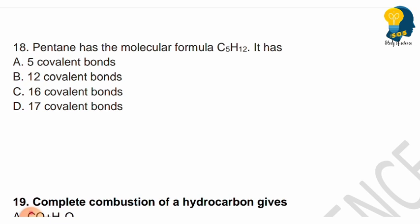Next question: Pentane has the molecular formula C5H12. It has how many covalent bonds? Options are 5, 12, 16, or 17 covalent bonds. Draw the structure of pentane and identify the covalent bonds between carbon-carbon and carbon-hydrogen to find the correct number.